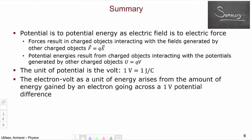In summary: potential is to potential energy as electric field is to electric force. Forces result from charged particles interacting with the fields generated by other charged objects through F = QE. Potential energies result from charged objects interacting with the potentials generated by other charged objects, mathematically written as U = QV. Fields and potentials have the same sort of relationship as forces and potential energies, and we can solve many problems using either framework. The unit of potential is the volt, where 1 volt = 1 joule per coulomb. And now you know that the electron volt is a unit of energy arising from the amount of energy gained by an electron going across a 1-volt potential difference. This concludes this video.